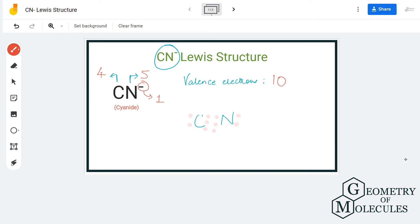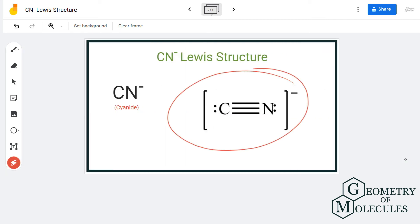So this is the Lewis structure for cyanide ion in which there is a triple bond between carbon and nitrogen atom.